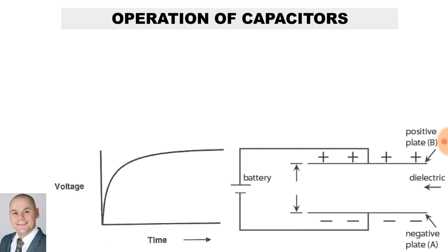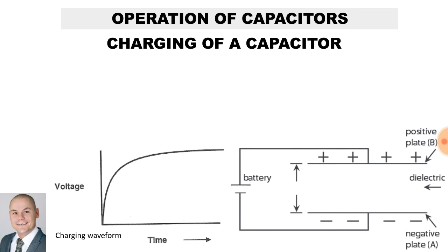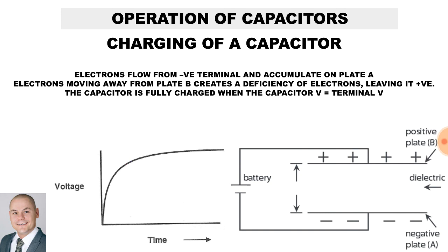The operation of capacitors — we can use a circuit diagram to help us understand. We have a DC power source connected to a capacitor. The negative plate is plate A and the positive plate is plate B. Here we have a charging waveform with time on the horizontal axis and voltage on the vertical axis. Electrons flow from the negative terminal and accumulate on plate A. Electrons moving away from plate B creates a deficiency of electrons, leaving it positive. The capacitor is fully charged when the capacitor voltage is equal to the terminal voltage.